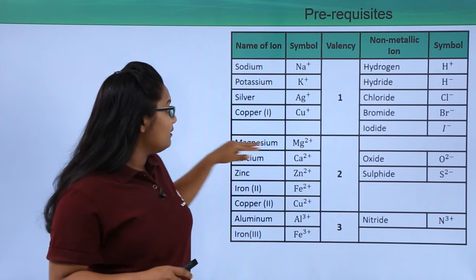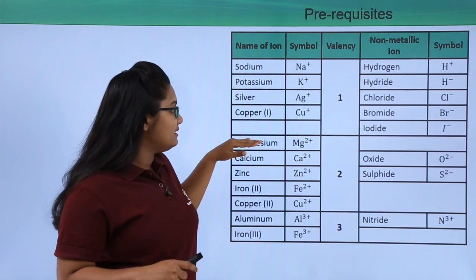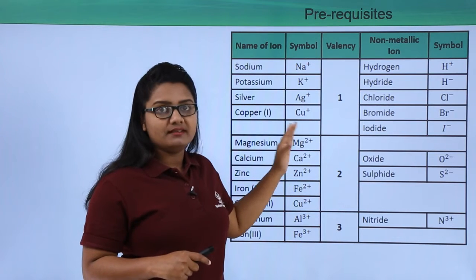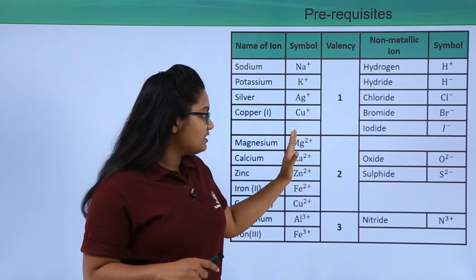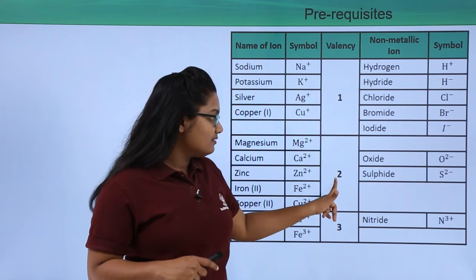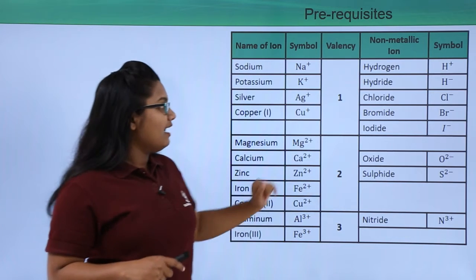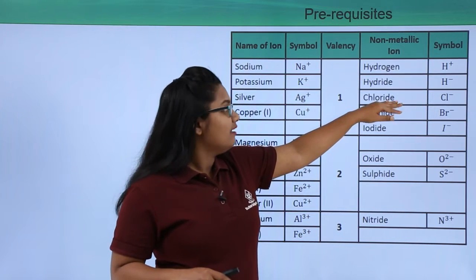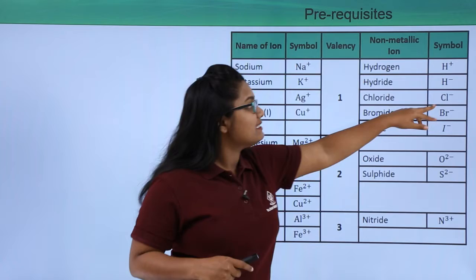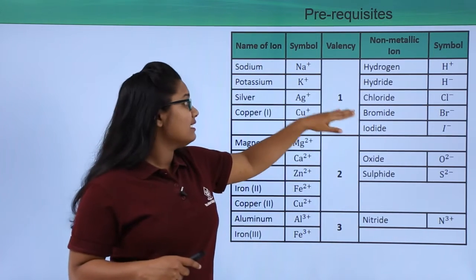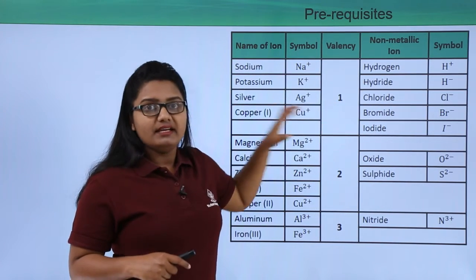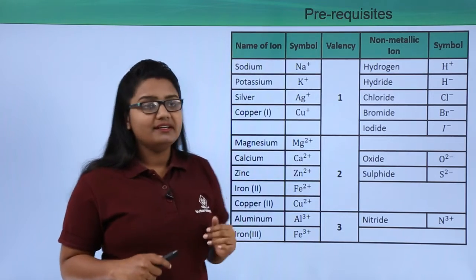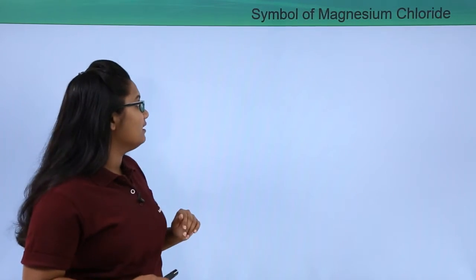Magnesium is represented as Mg²⁺, and its valency is 2. The chlorine ion is represented as Cl⁻, and its valency is 1. Keeping this information in mind, we will now write the chemical formula.